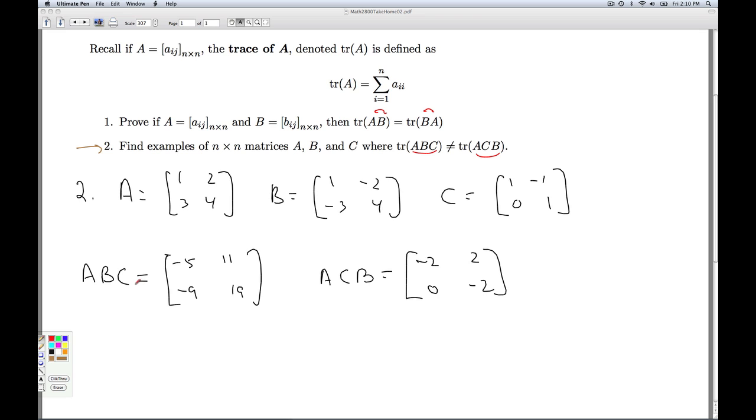So I picked these three standard matrices. I computed ABC to get this matrix. And so the trace of ABC, you add the diagonal entries. So negative 5 plus 19 is 14. And the trace of ACB on the other hand, you add the diagonal entries, you get negative 4. So you can see that these are not the same. And so that's the example we're looking for. That'll do it for take home two. Thank you.